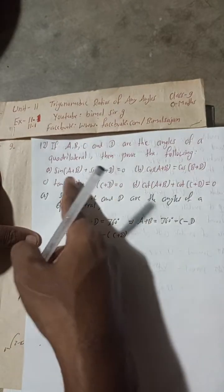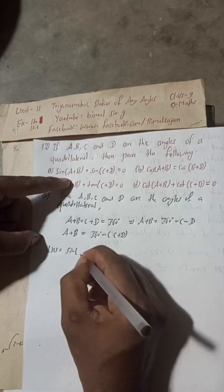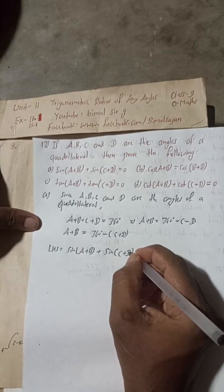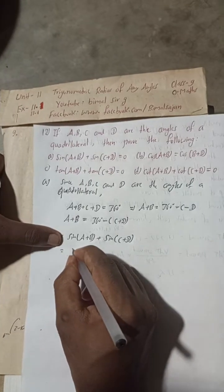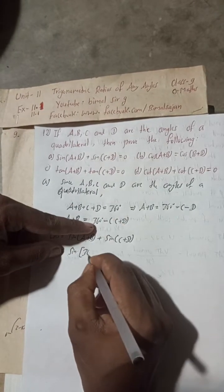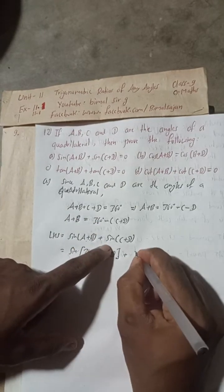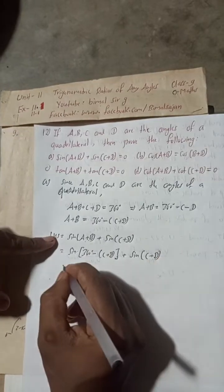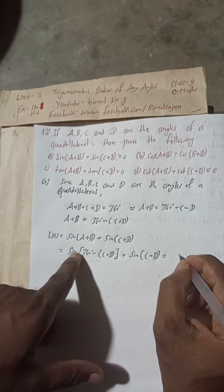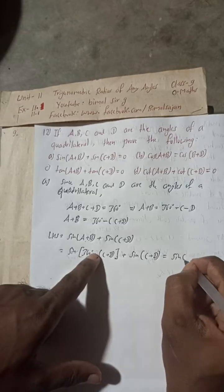Now for number A, LHS = sin(A+B) + sin(C+D). We substitute A + B = 360° − (C+D), so this becomes sin(360° − (C+D)) + sin(C+D).